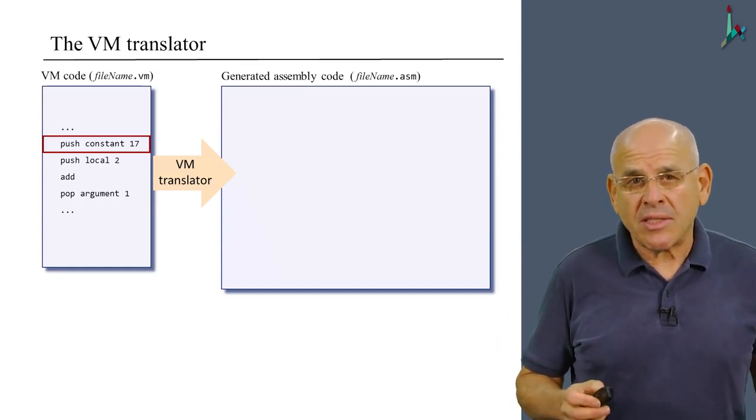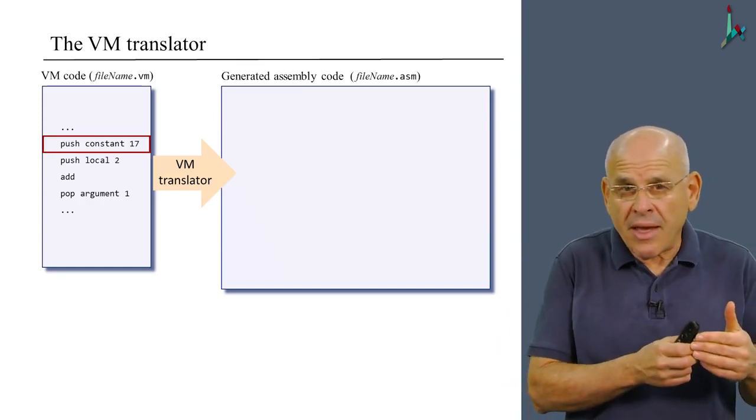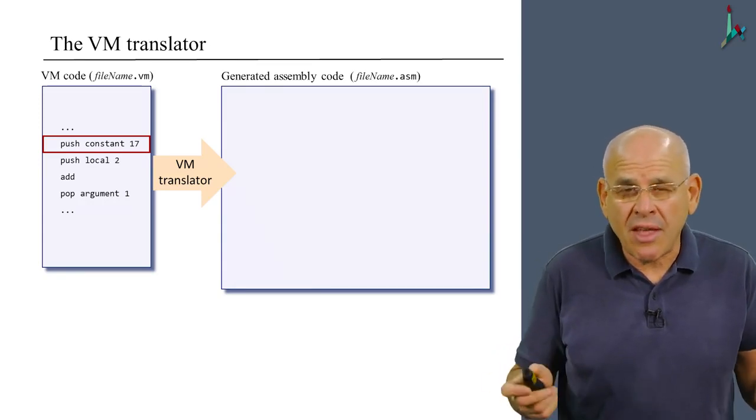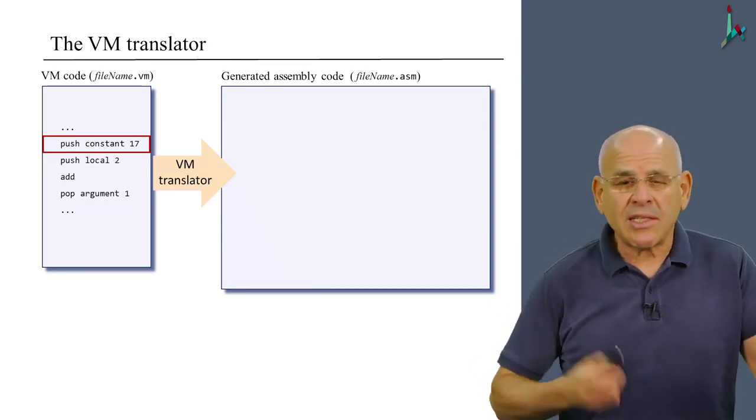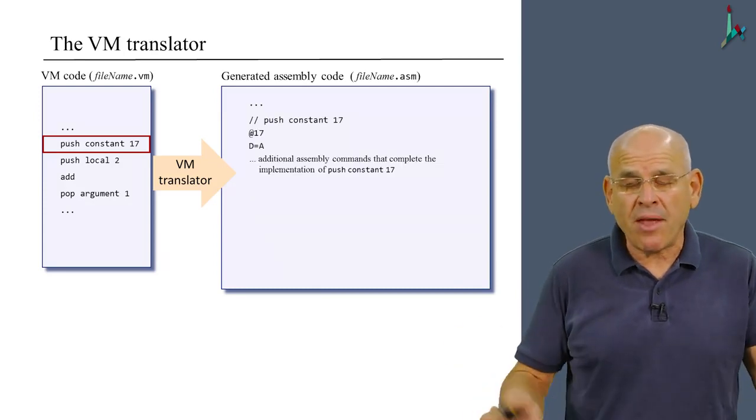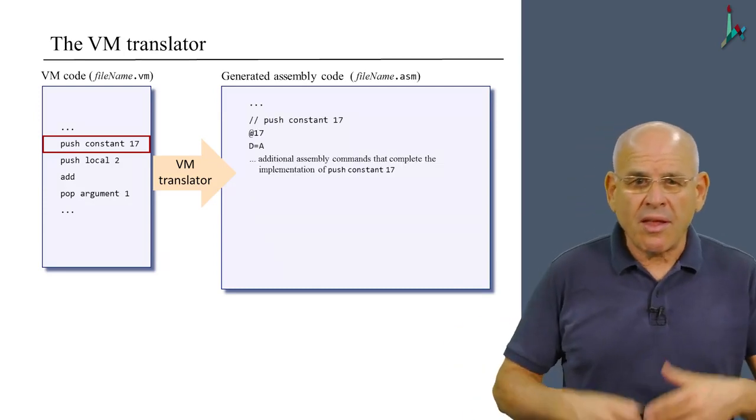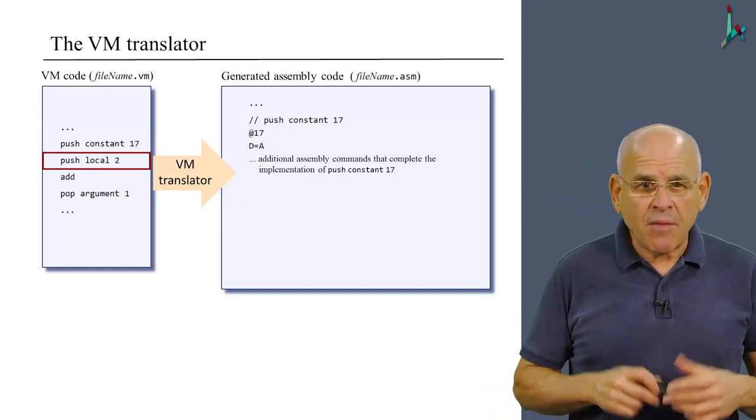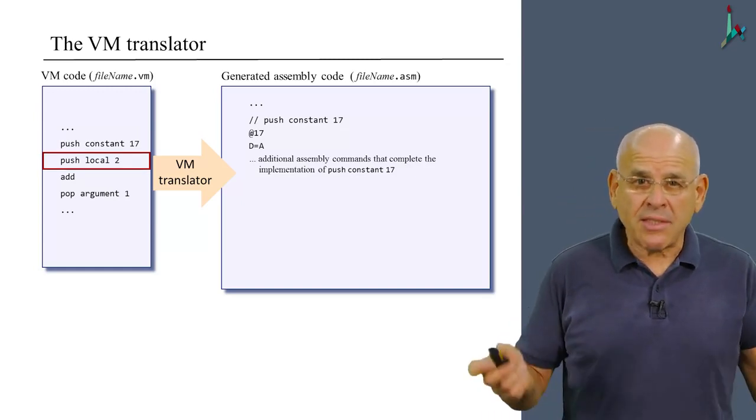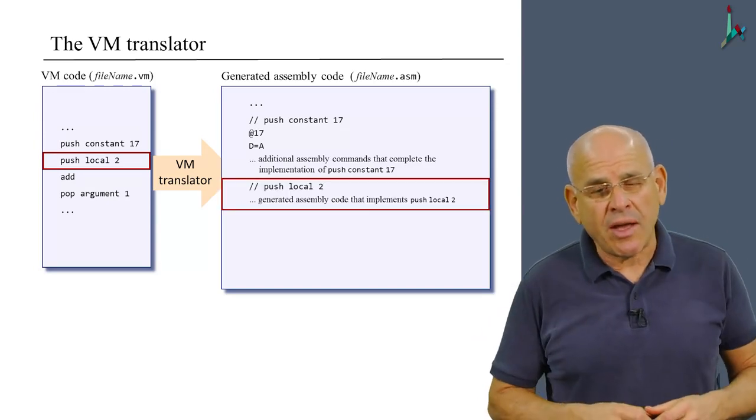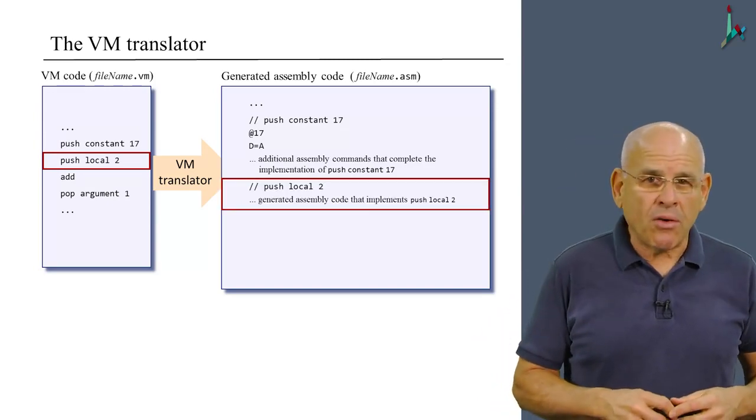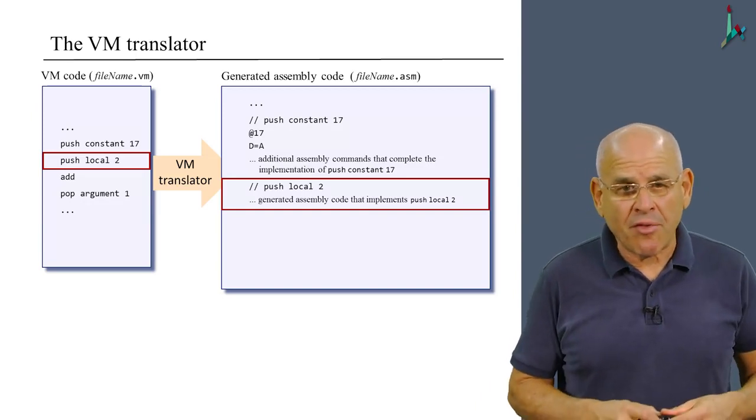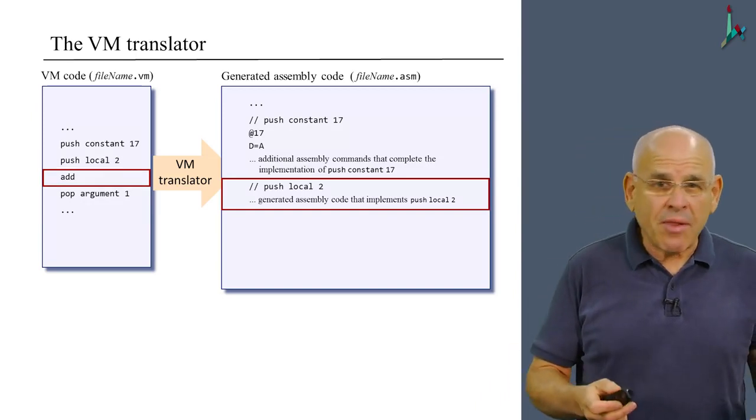So for example, the VM translator can begin to parse this particular command, the push constant 17, breaks it into its lexical elements and builds from it the output at 17, d equals a, and so on. Then it moves on to the next command, passes it also, and generates the assembly code that realizes push local 2 on the target platform. Then it does the same with add.